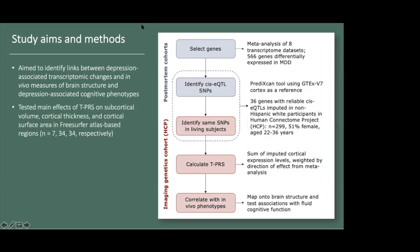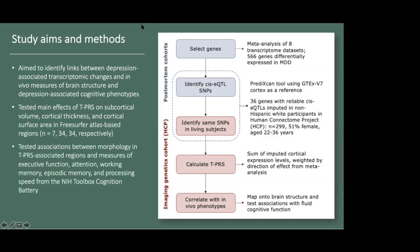In our primary analysis, we tested main effects of TPRS on subcortical volume, cortical thickness, and cortical surface area in FreeSurfer atlas-based regions. We examined each of these brain-based phenotypes separately because they have distinct genetic origins and developmental trajectories, and we also averaged values over hemisphere in order to reduce the number of comparisons.